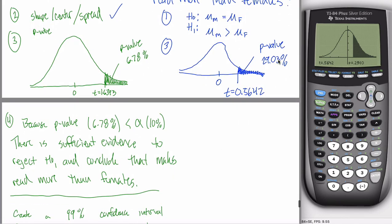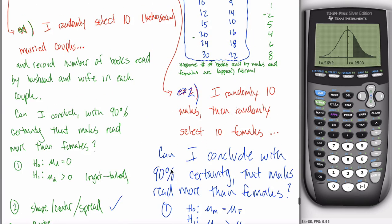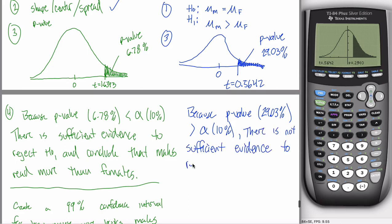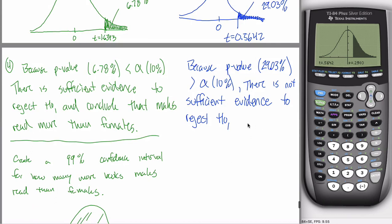What I can now do is state my conclusion. And let's see here, my p-value is really large. It's larger than alpha. Recall that alpha was 10% because my level of certainty was 90%. Anytime my p-value is greater than alpha, there's not sufficient evidence. So I guess I can write it again because my p-value, which was 29.03%, is greater than alpha, which is 10%. There is not sufficient evidence to reject the null hypothesis. So I cannot conclude that males read more than females.